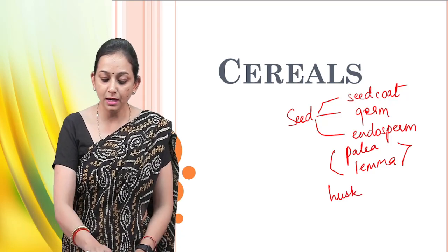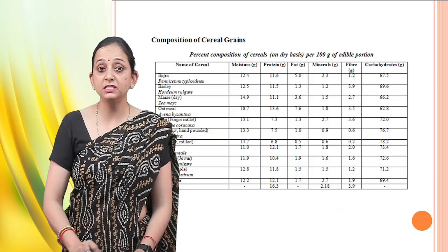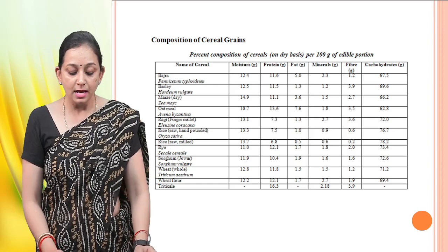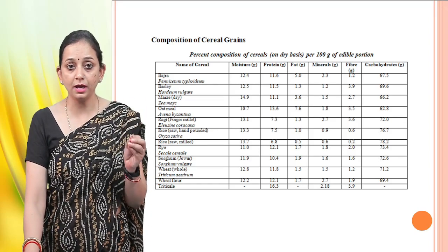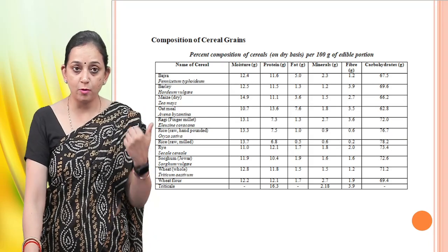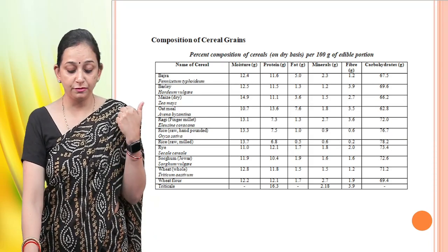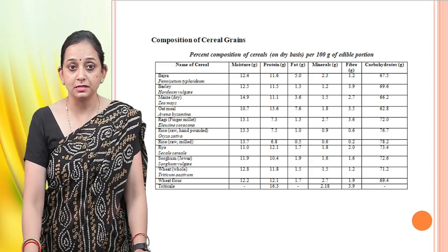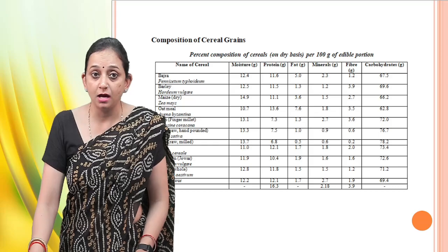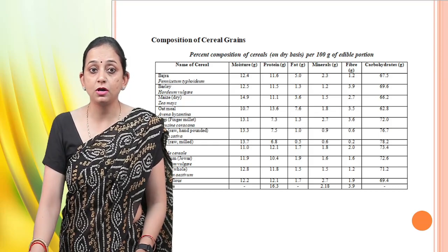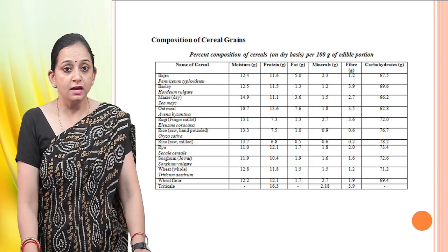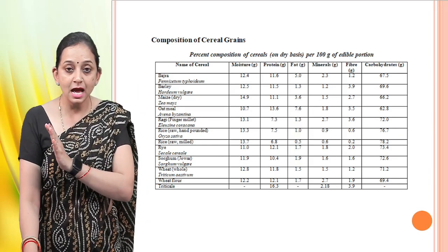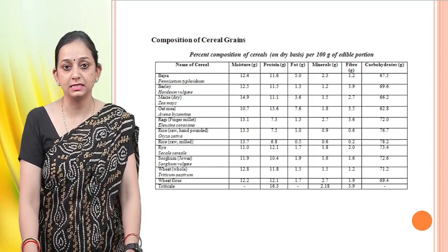Next we talk about the composition of the cereal grains. As you can see in this table, there are different kinds of cereals — bajra, barley, maize, oats, and others — and the amounts of moisture, protein, fat, minerals, fiber, and carbohydrate present in each are listed.